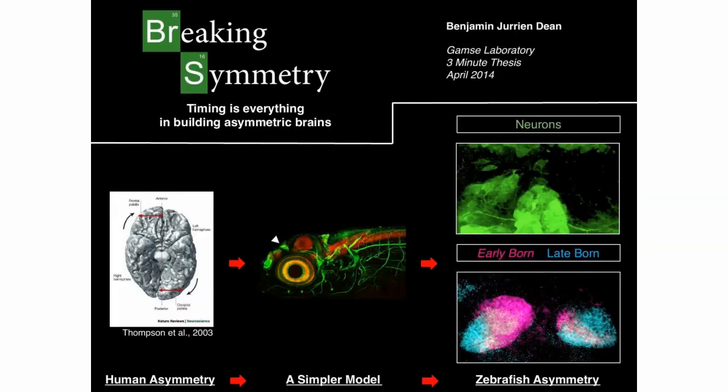To study this, because many organisms have asymmetric brains, we turn to the zebrafish, which is a small organism, and when they're larvae or babies, they're see-through. We can use very powerful microscopes to literally watch their brains as they develop. In my work, we can take small zebrafish and look at the asymmetric region of their brain, which you're seeing up here in green, where neurons are represented in green.